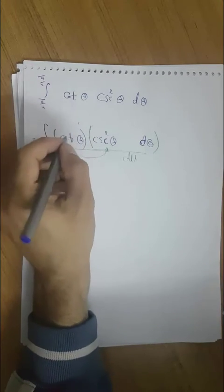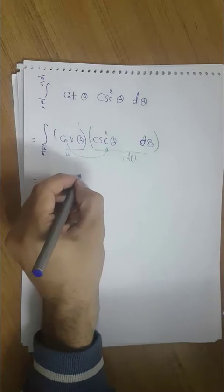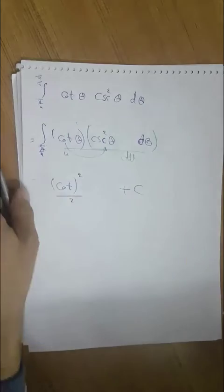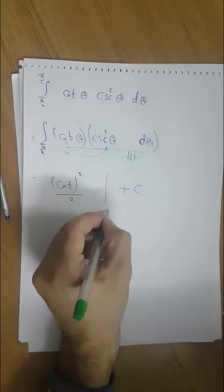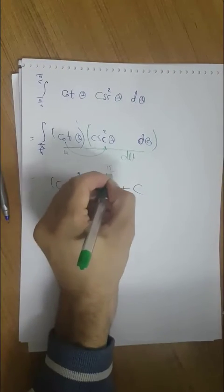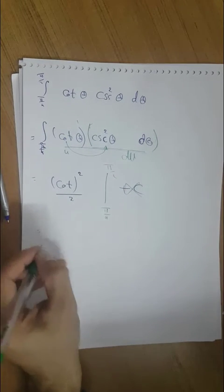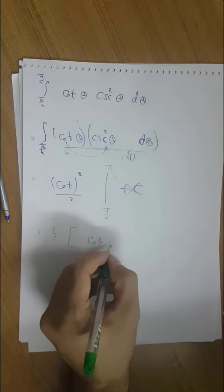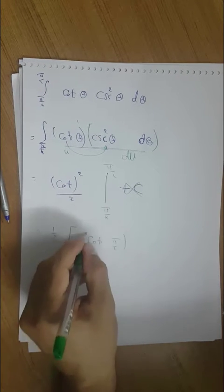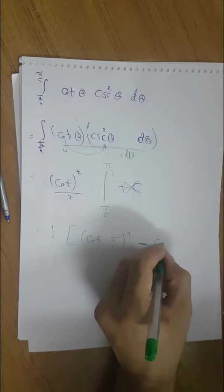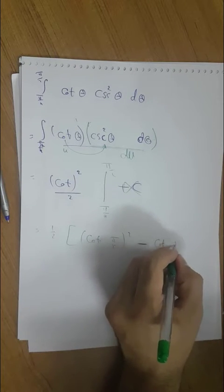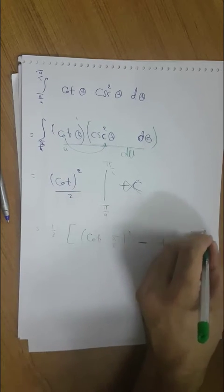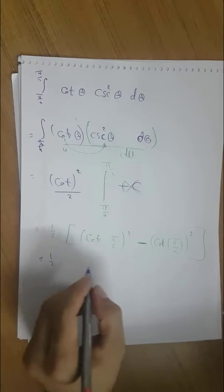Cotangent is to the power one here. Inside has got outside. So it equals cotangent squared over 2, plus C. Because we have the limits from pi over 4 to pi over 2, we evaluate: pi over 4 to pi over 2, and the C is gone. So it will be one-half times cotangent squared of pi over 2, minus cotangent squared of pi over 4.